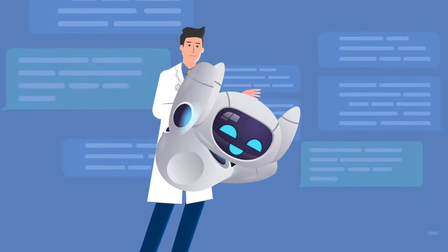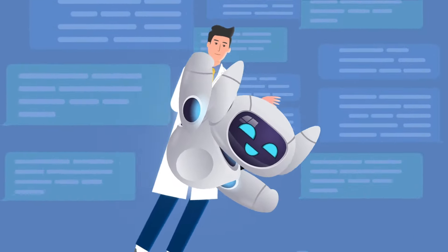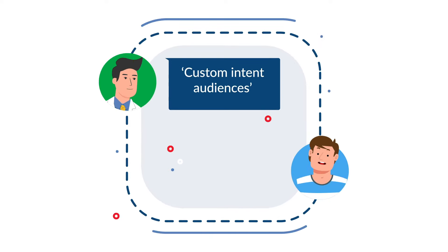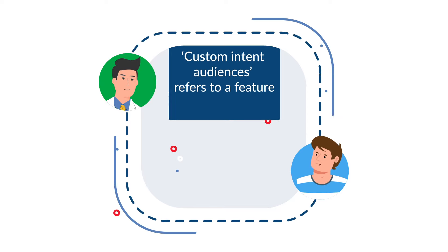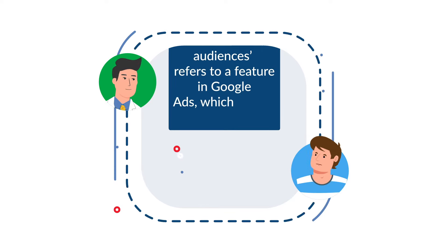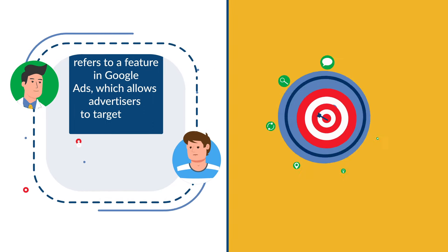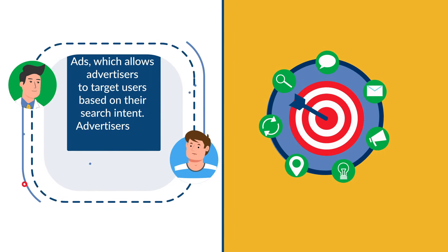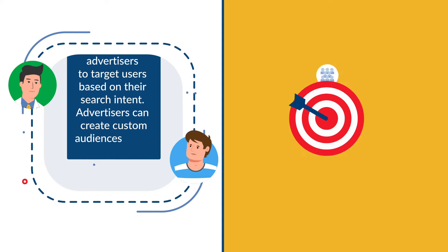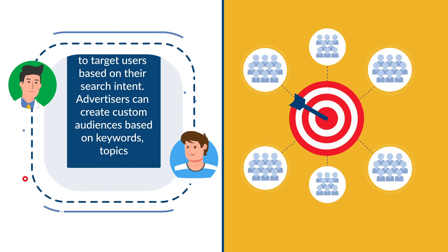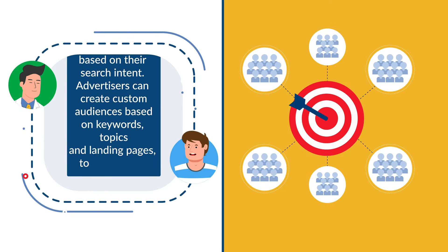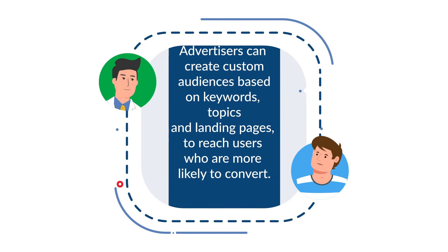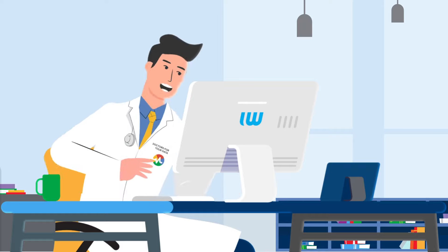Read this. I use ChatGPT to write an explanation. Custom Intent Audiences refers to a feature in Google Ads which allows advertisers to target users based on their search intent. Advertisers can create custom audiences based on keywords, topics and landing pages to reach users who are more likely to convert.